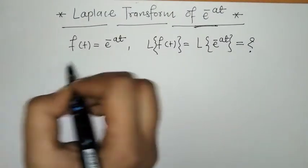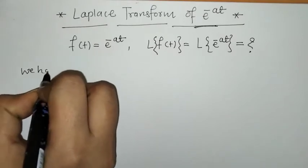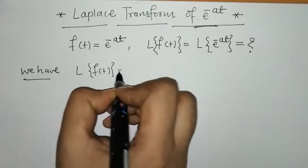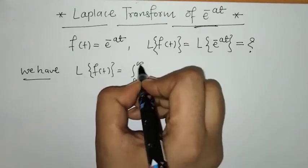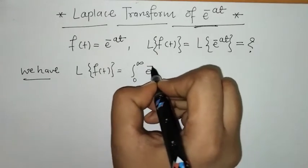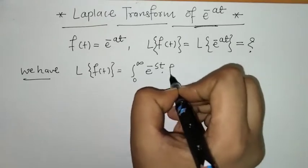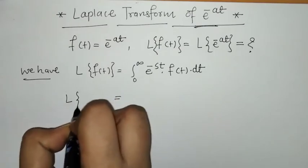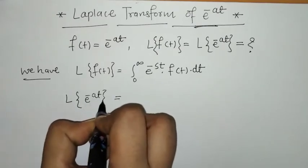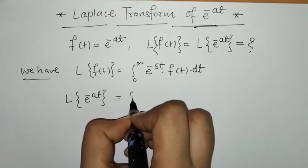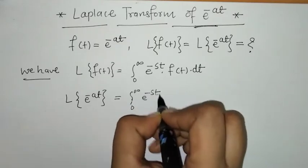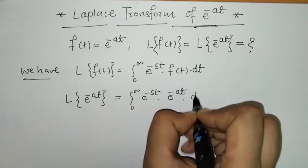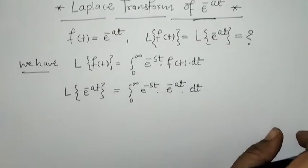By definition of Laplace transform, the Laplace of f of t is the integral with limits 0 to infinity of e raised to minus st times f of t. So the Laplace of e raised to minus at is the integral of e raised to minus st into e raised to minus at, with respect to t.